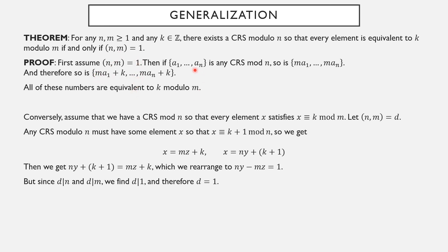So to construct a complete residue system modulo n where every element is equivalent to k modulo m: take a complete residue system modulo n, multiply every element by m (since gcd(m,n) = 1, this remains a CRS mod n), then add k to every element. Adding the same number to every element preserves the CRS property, and now everything is equivalent to k modulo m.